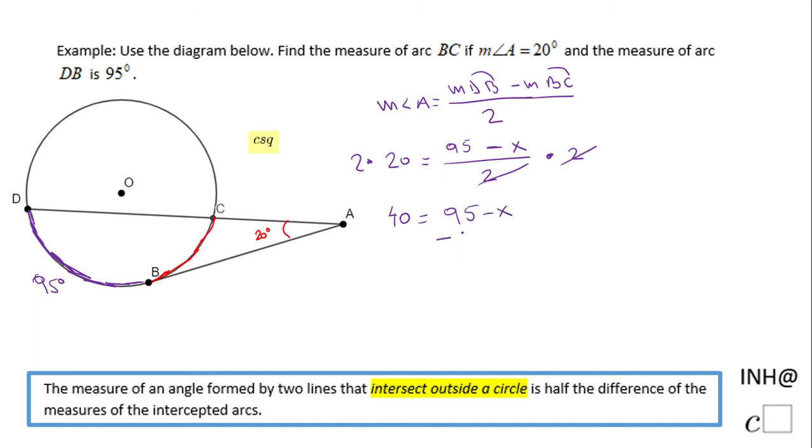If I want to solve for X, I'm gonna subtract 95. 40 minus 95 will be negative 55, but there will be negative X and obviously X will be positive 55. You just switch the sign, that's the easiest way.